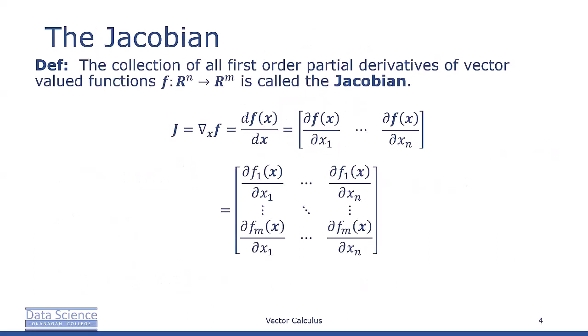The collection of all first-order partial derivatives of vector value functions f from R^n to R^n is called the Jacobian. J, or the gradient of f, or df of x dx, is going to be the row vector of derivatives: df of x dx1, df of x dx2, all the way to df of x dxn.